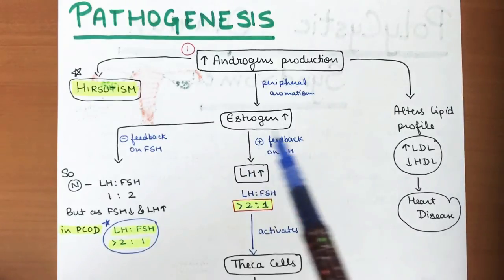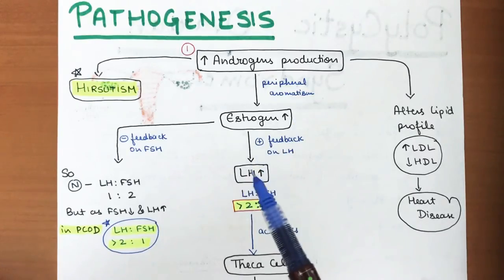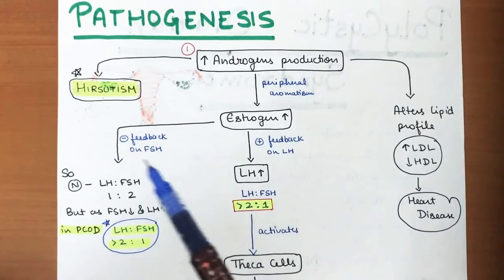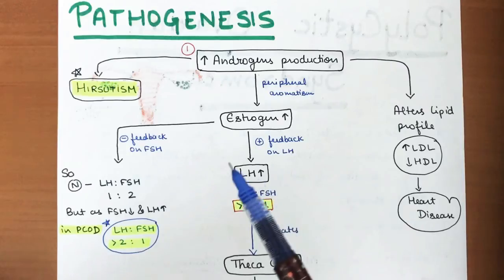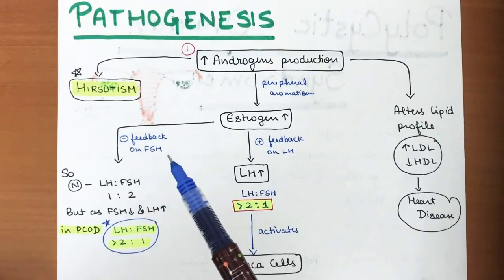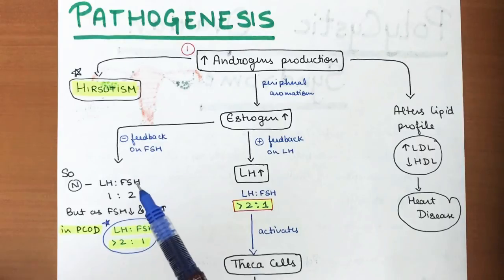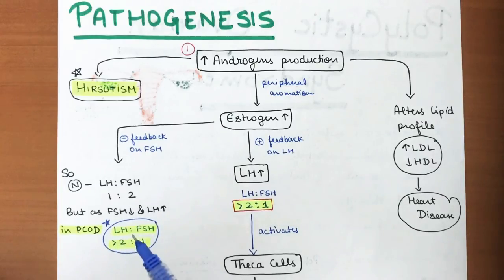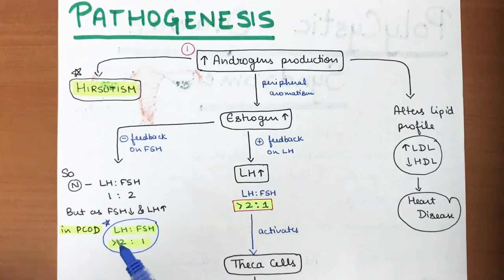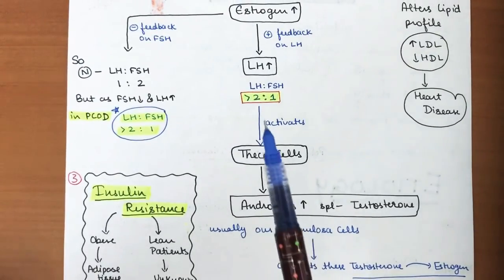These androgens undergo peripheral aromatization, increasing estrogens. Elevated estrogens exert a positive feedback on luteinizing hormone (LH) and a negative feedback on follicle-stimulating hormone (FSH). This increases LH while decreasing FSH. In normal females the LH:FSH ratio is 1:1, but in PCOD it is specifically characterized by LH being twice as high as FSH — a ratio greater than 2:1.